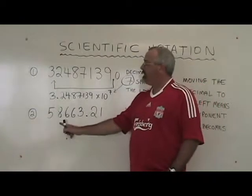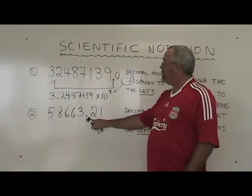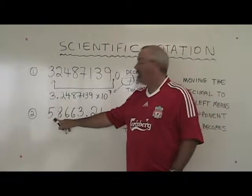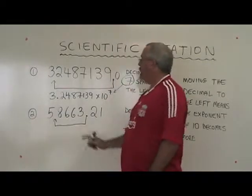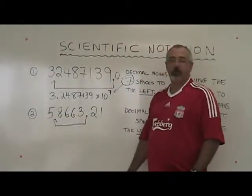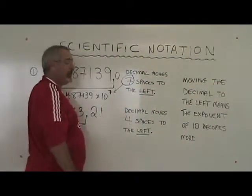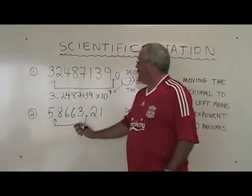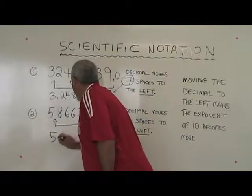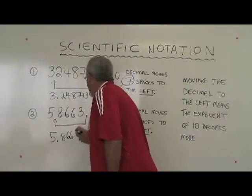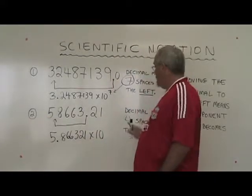Let's try this again with example two. Example two already has a decimal showing. I need to move that decimal so that there is only one non-zero digit to the left of it, so I'm moving that decimal here. That means I've moved it four spaces to the left. My new number will be 5.866321 times ten to the power of four.